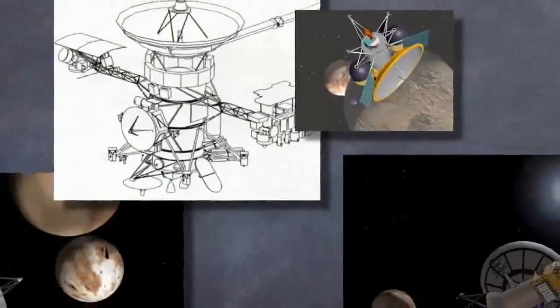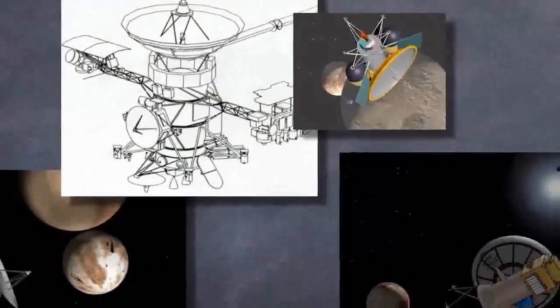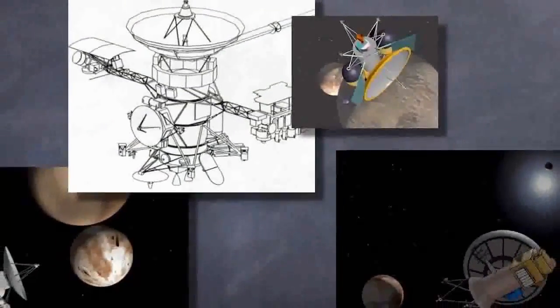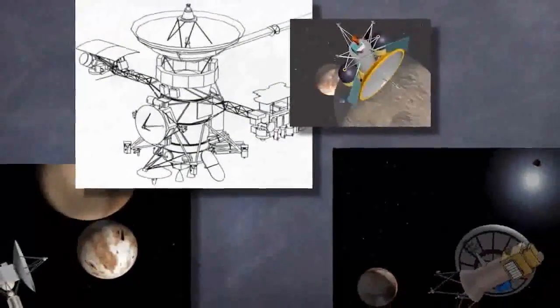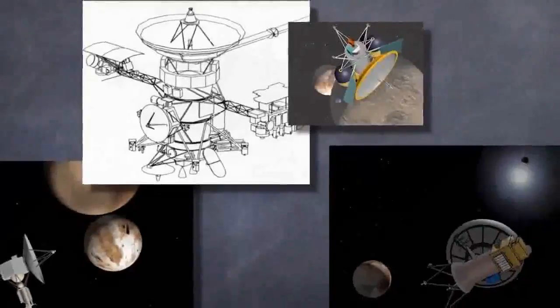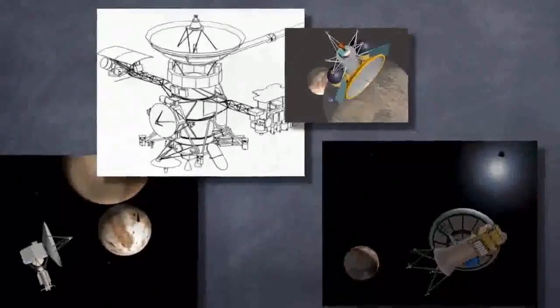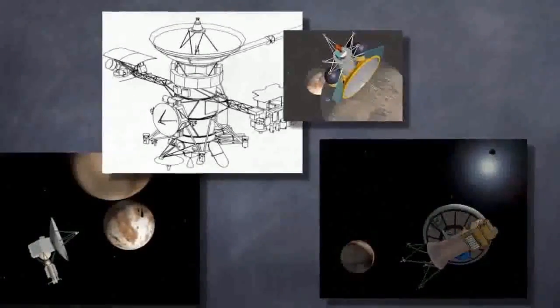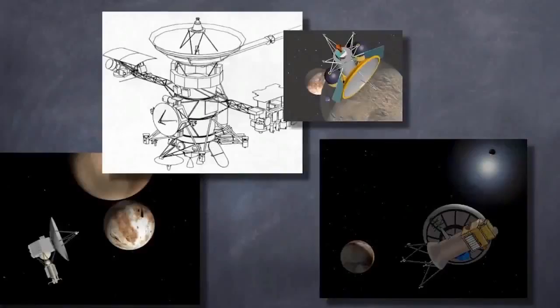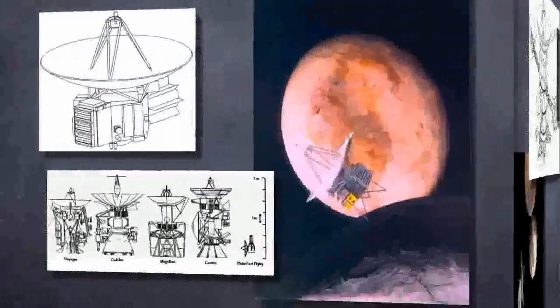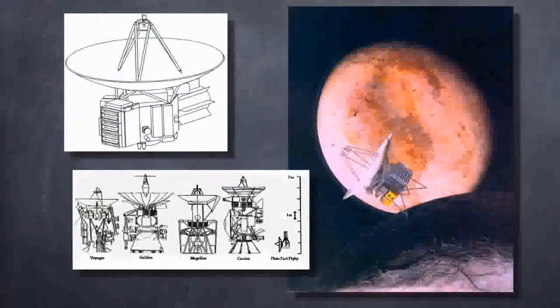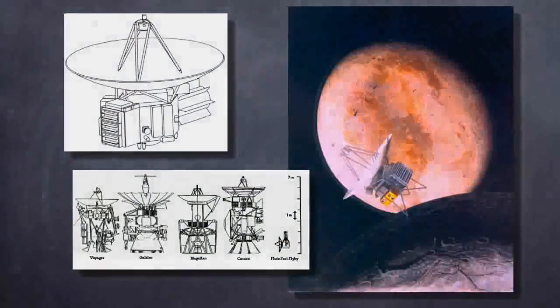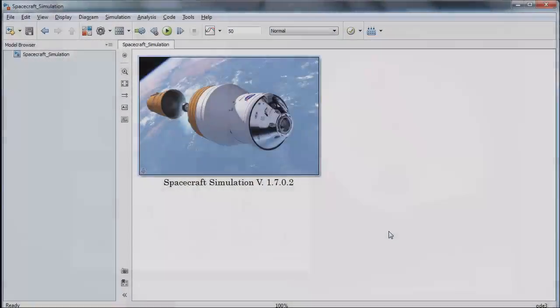Typically, a spacecraft with orbit transformation consists of several main components including structure, engine, navigation instruments and control actuators. They play an important role in an orbit transformation.